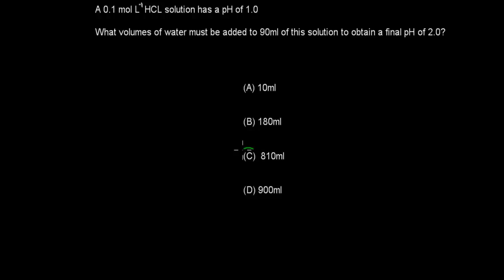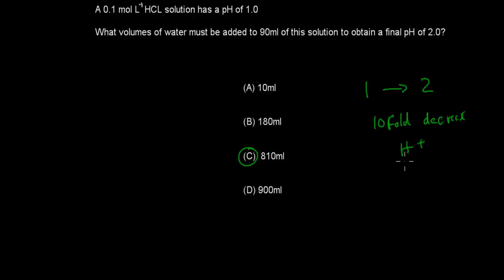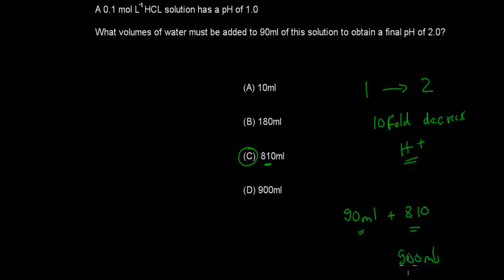Welcome back. The correct answer is C. Going from pH 1 to pH 2 is a tenfold decrease in hydrogen ion concentration. We start with 90 mL of solution and want to dilute it by a factor of 10. Adding 810 mL gives a total of 900 mL. Since 900 mL is 10 times more than 90 mL, the solution has been diluted 10-fold, meaning the hydrogen ion concentration is 10 times less. That changes the pH from 1 to 2. So 810 mL (option C) is correct.